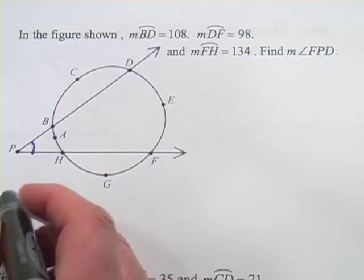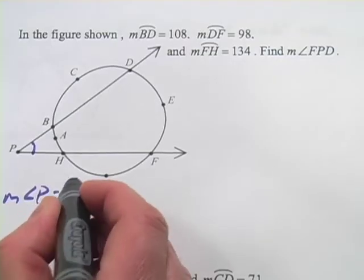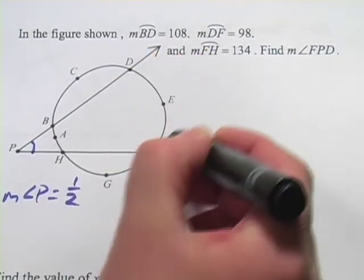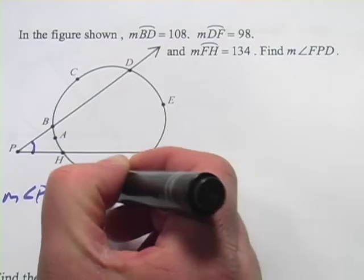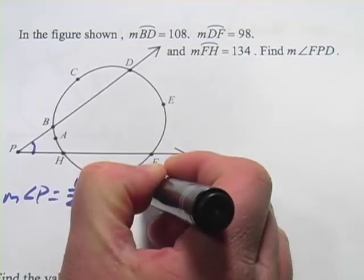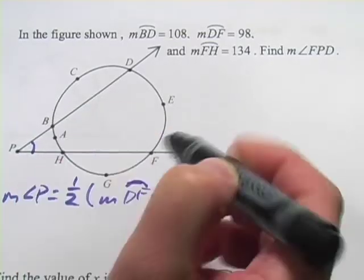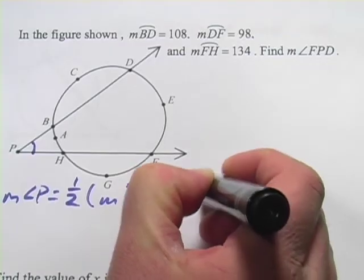This angle, let's call it angle P, so the measure of angle P is going to be one half of the large part of the arc that gets intercepted. So from this one, that would be the measure of DF minus the little arc that gets intercepted here, so the measure of arc BH.